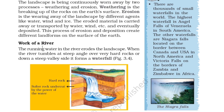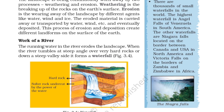Work of a river: the running water in a river erodes the landscape. When the river tumbles at a steep angle over very hard rocks and down a steep valley side, it forms a waterfall. In figure 3.4 you can see hard rock and softer rock undercut by the power of water.